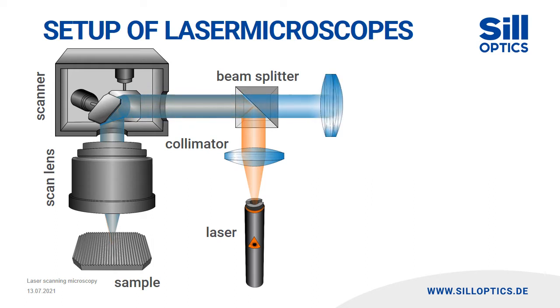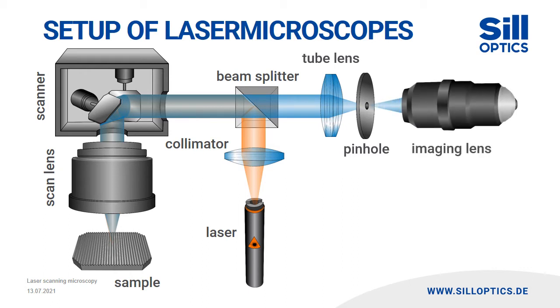The fluorescent light then becomes focused by the tube lens and can thus pass through the pinhole without vignetting. On the other side, the fluorescence light is imaged on the detector by another lens.